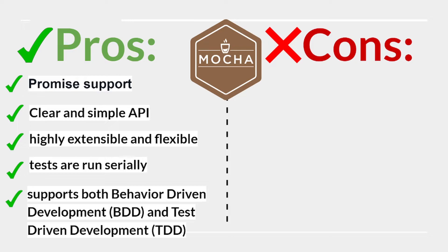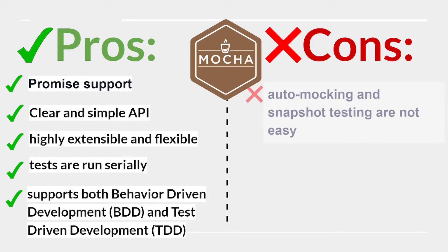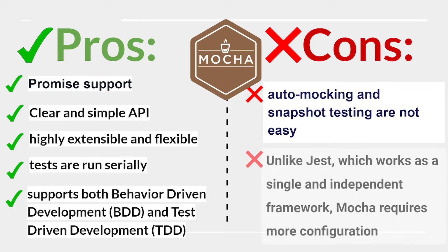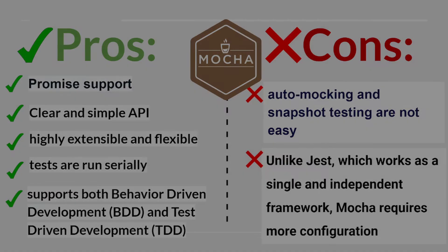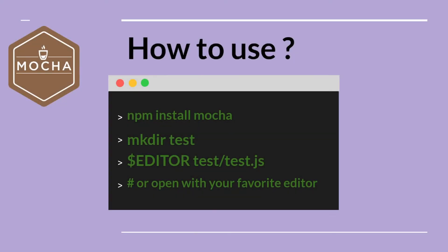Mocha supports both behavior-driven development and test-driven development. Cons: automocking and snapshot tests are not easy — unlike Jest, which works as a single independent framework, Mocha requires more configuration. Run the appropriate commands to use it.